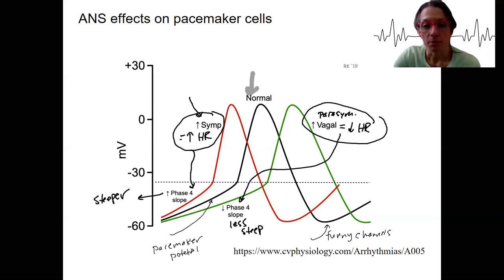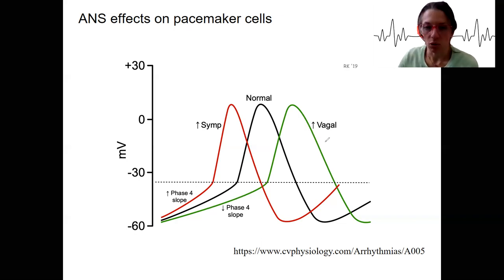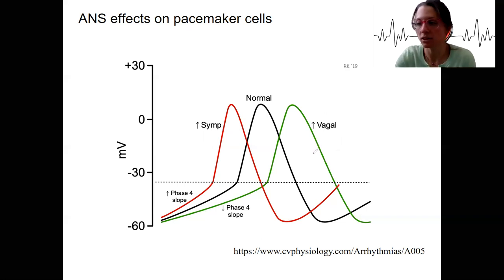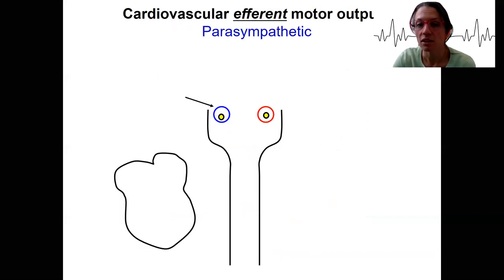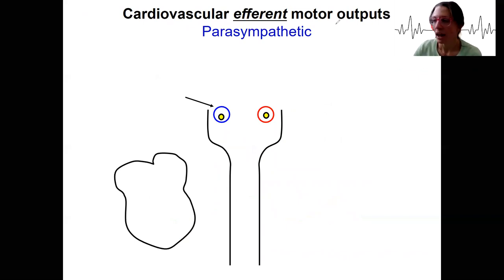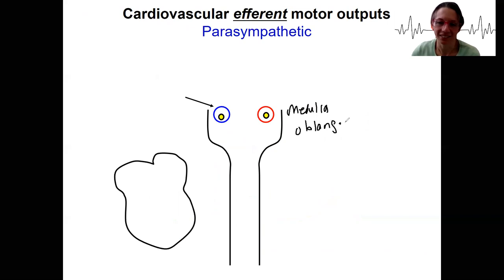Let's look at this first with the parasympathetic nervous system — how would you make that slope less steep than it is beforehand? First, what part of the brain is going to control this? This is going to be controlled by the — actually, not the adrenal medulla —